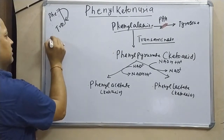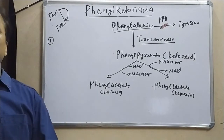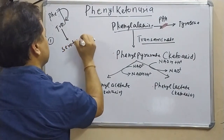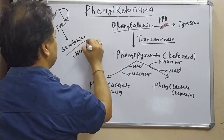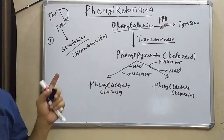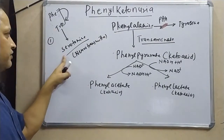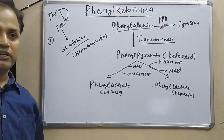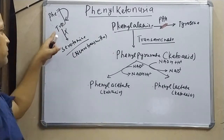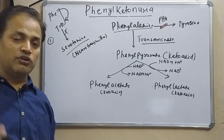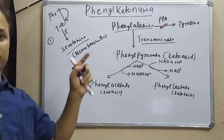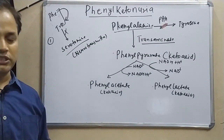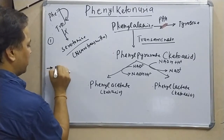Additionally, tryptophan normally gives us serotonin by decarboxylation. Serotonin is an excitatory neurotransmitter. However, the high levels of phenylalanine competitively inhibit the conversion of tryptophan to serotonin, slowing down serotonin synthesis. With reduced serotonin levels in the brain and nervous system, nerve conduction and signaling processes are affected.